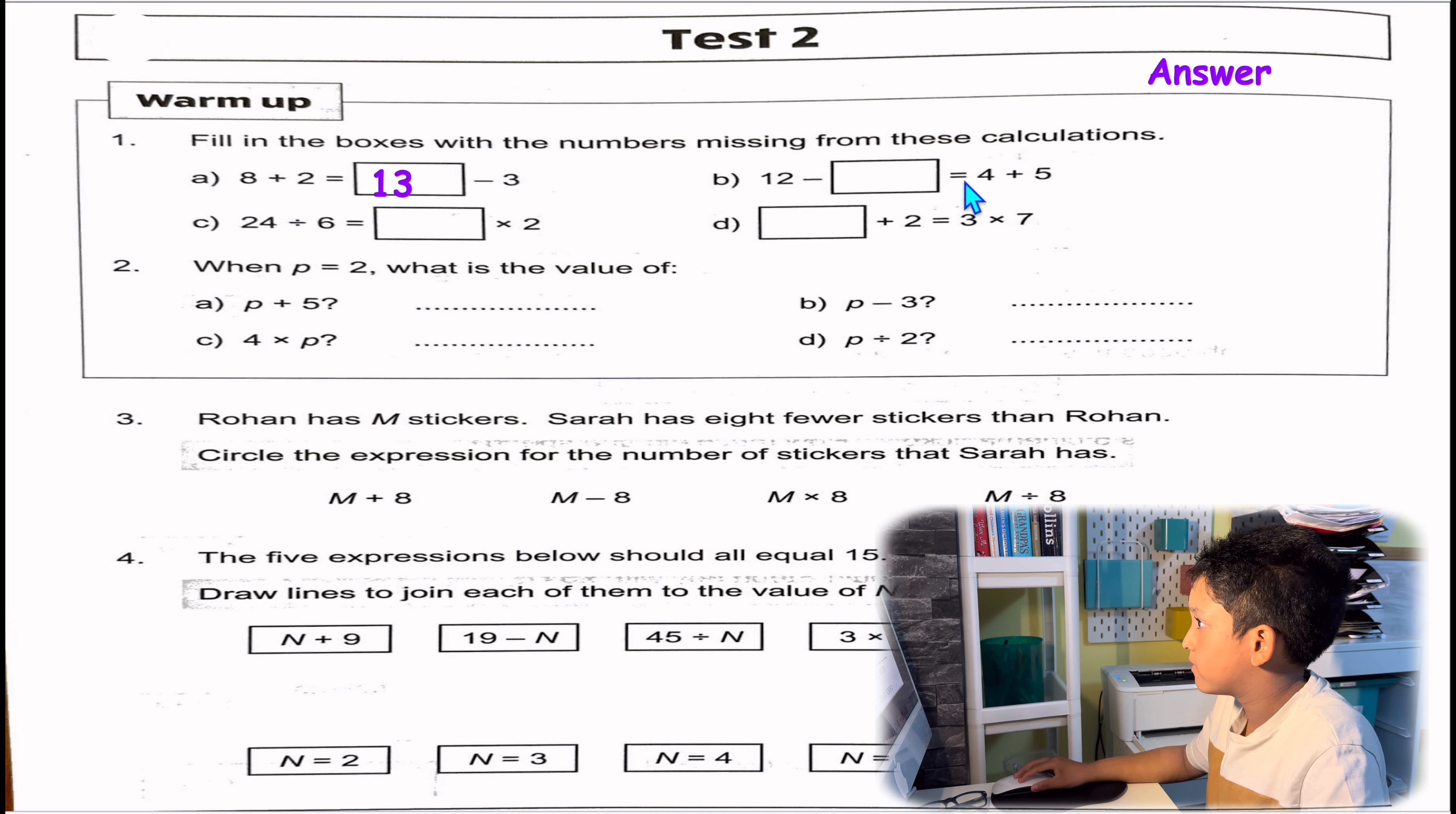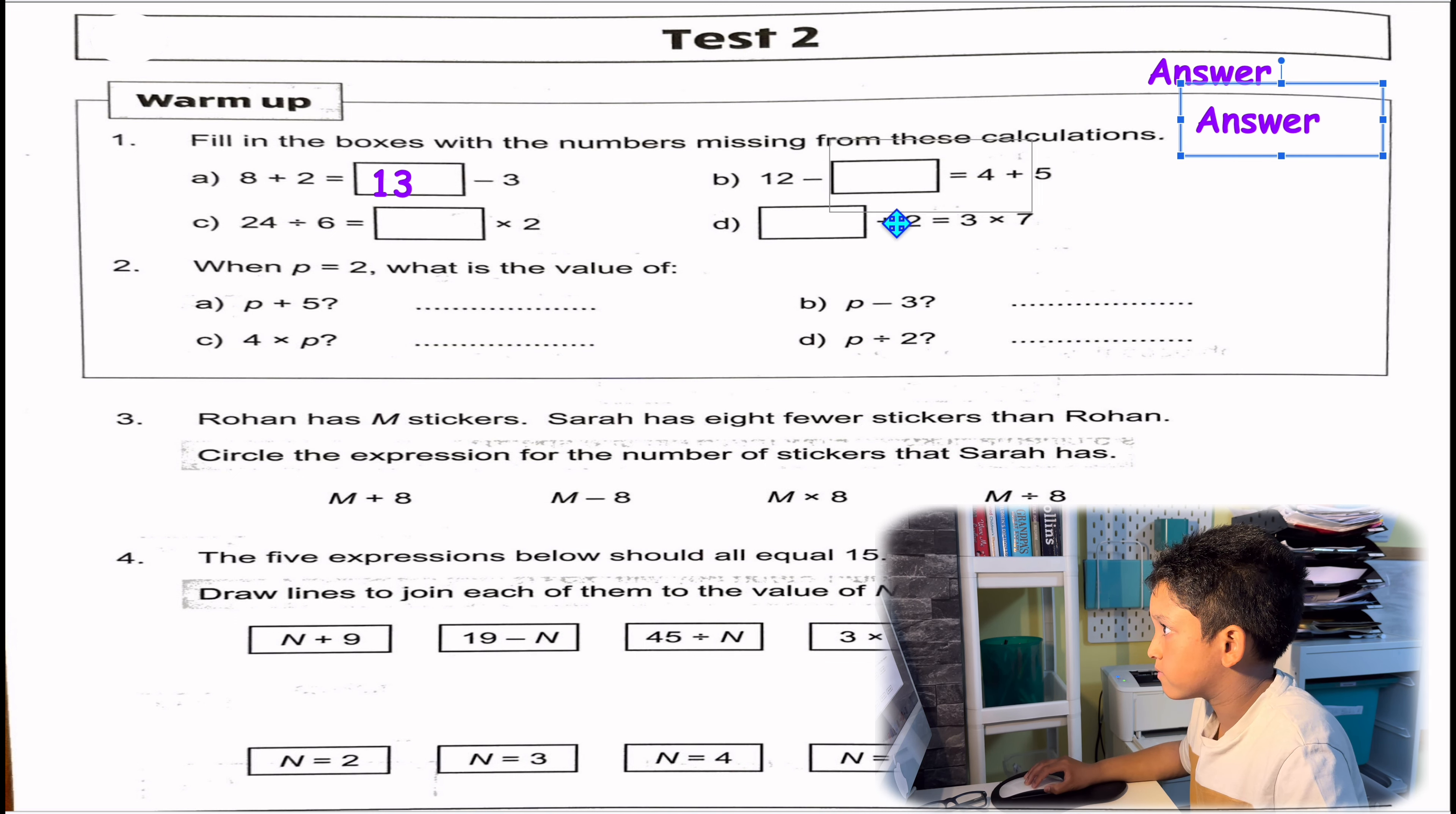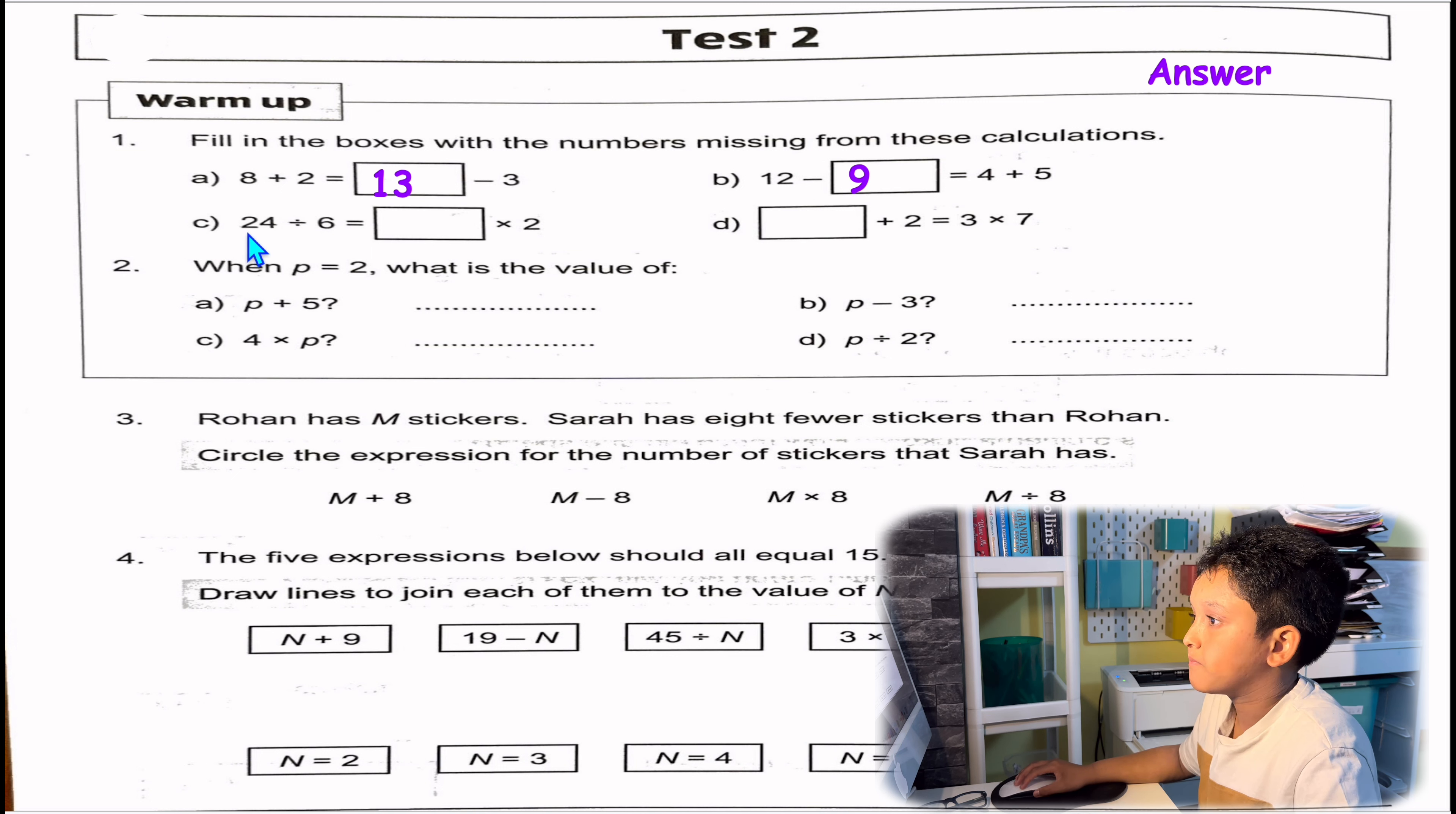12 take away equals 4 plus 5. 4 plus 5 is 9, so 12 take away 3 equals 9. Question C: 24 divided by 6, which is 4, equals something times 2. 24 divided by 6 equals 4. So that means 2 times 2 will equal 4.